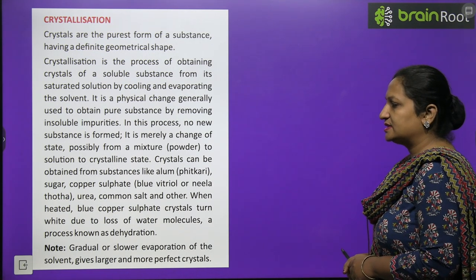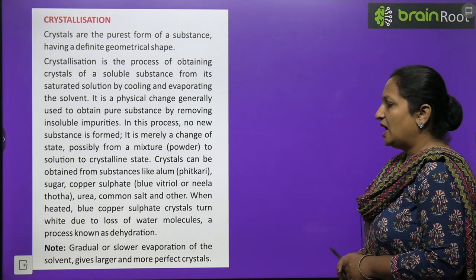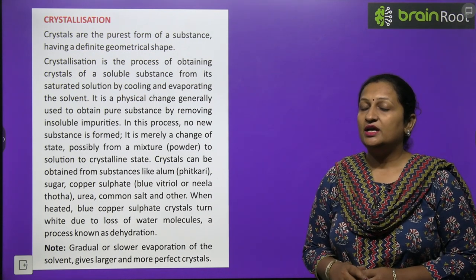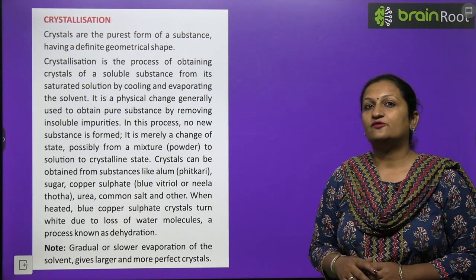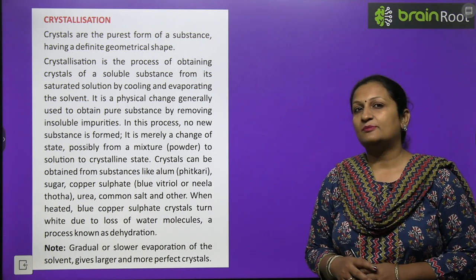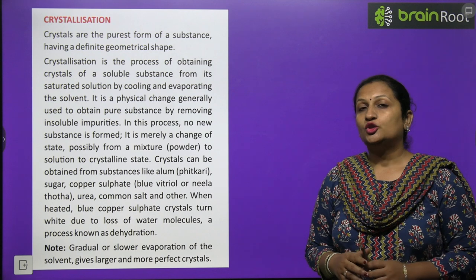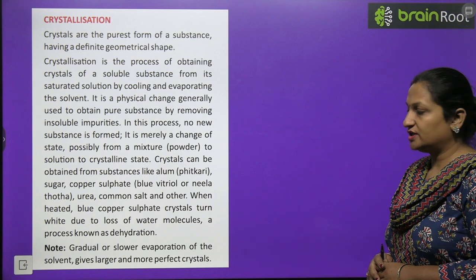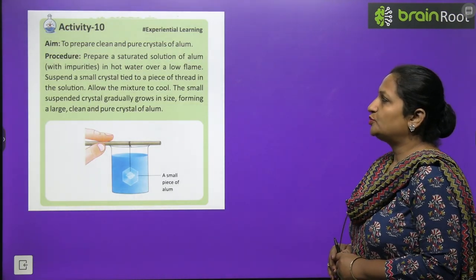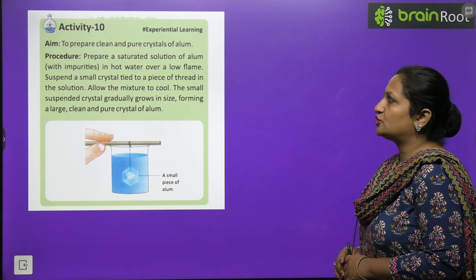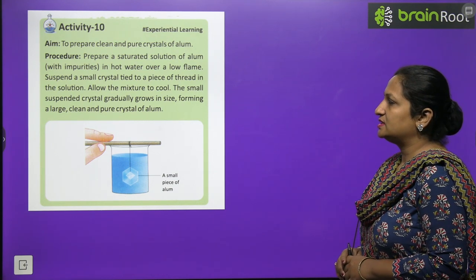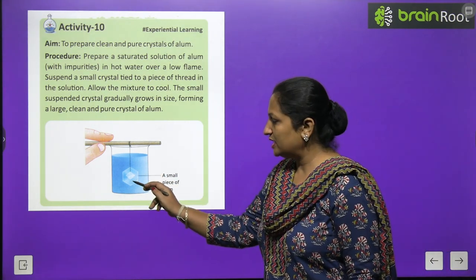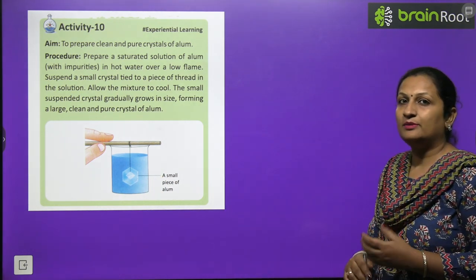When blue copper sulfate crystals are heated, they turn white due to loss of water of crystallization - this process is called dehydration. Anhydrous copper sulfate is white. If you add one drop of water back to it, it becomes hydrated again and turns blue. Gradual or slower evaporation of solvent gives larger and more perfect crystals. Activity: Prepare a saturated solution of alum in hot water over a low flame. Suspend a small crystal tied to thread in the solution and allow to cool - the alum crystallizes onto the seed crystal, growing into a larger crystal.